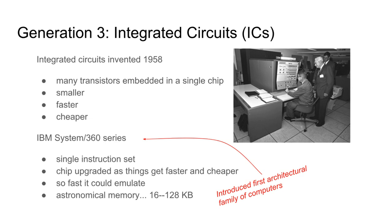These machines were so fast that when new CPUs were introduced within the family, they could emulate the previous versions — which is remarkable. They also had astronomical memory for the time: somewhere between 16 kilobytes in the low-end model all the way up to 128 kilobytes, which at this period was an amazing amount of memory.